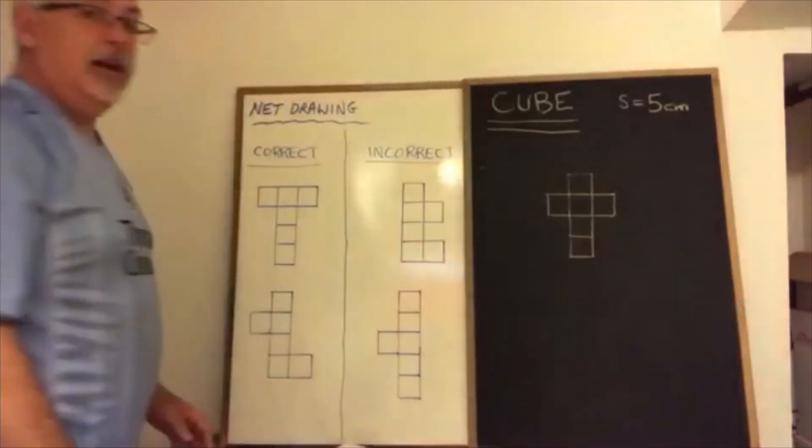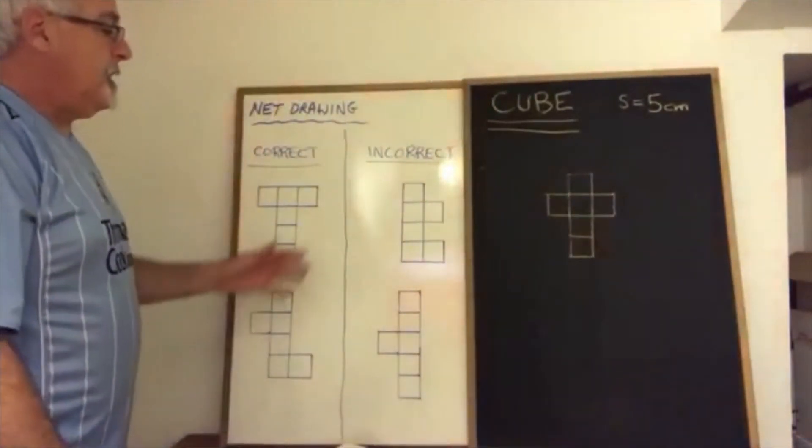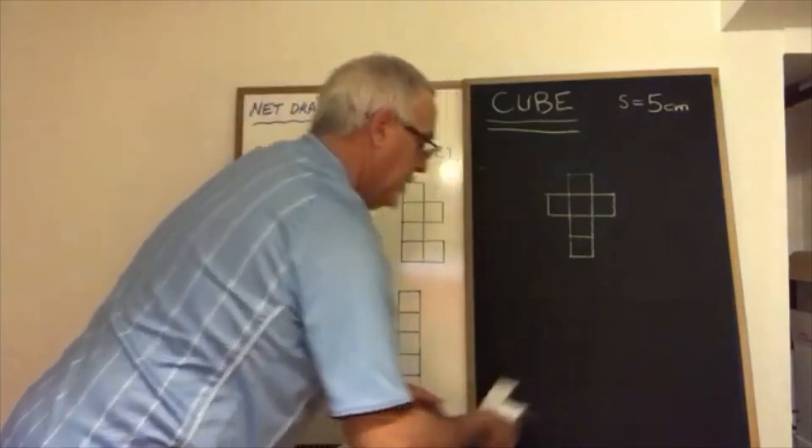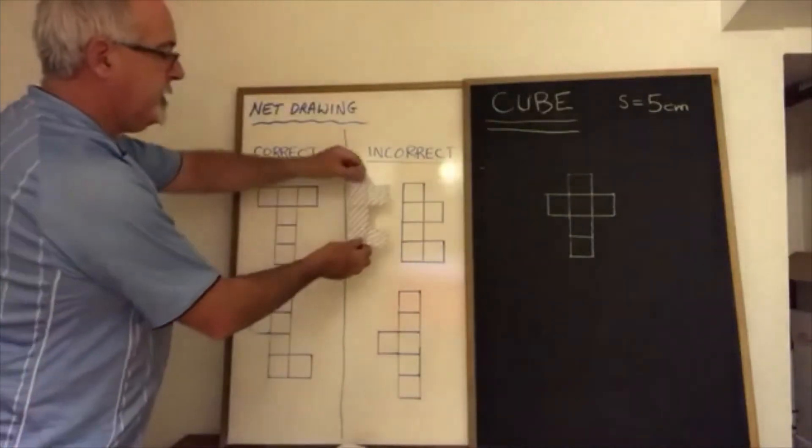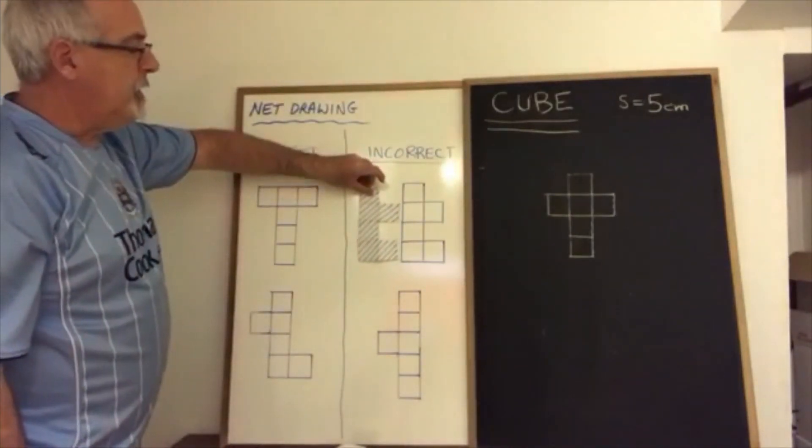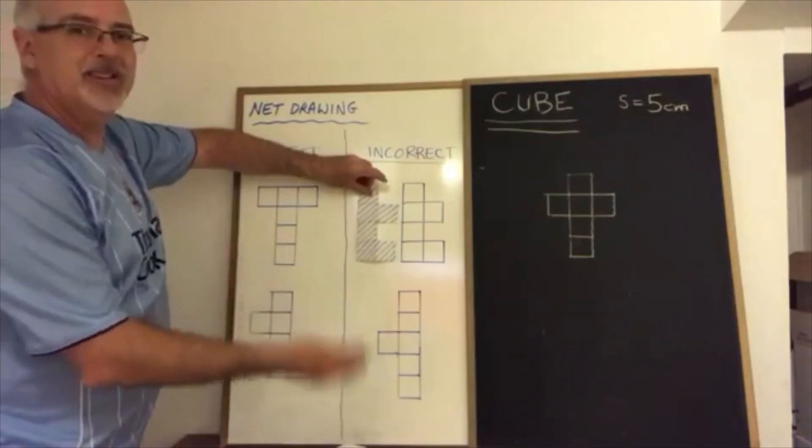There are more than 11 incorrect ways of doing it but I'm only showing two of them. So here are two incorrect ways of drawing a net of a cube and I'll prove it. So this one on the top is breaking that rule. We drew the four squares in a row but we have two extras on the side but they're both on the same side.